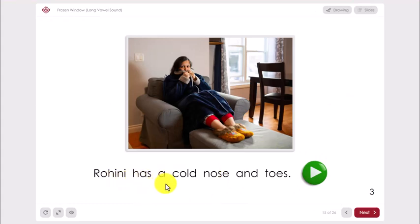Rohini has a cold NOS. Hmm, no, that isn't right. What can I do? I can look at the picture. I see her holding a coat up to her face, but I still don't know the word NOS. So I will look at the letters. N-O-S-E. Oh, there is an E. I think the word is nose, but I will listen and check if I am right.